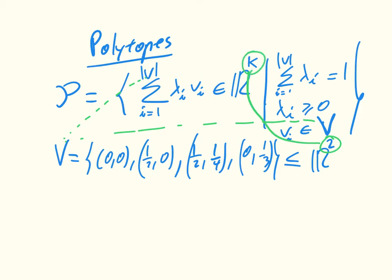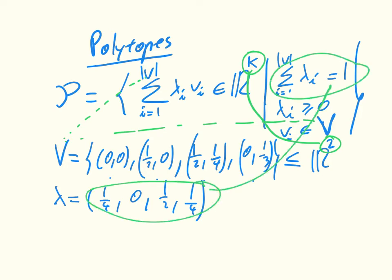If we have that, we can take any lambda that is going to have the same size as the size of V. For example, we could have lambda equals (1/4, 0, 1/2, 1/4). We're okay because the sum of the lambdas is equal to 1, as we need here, and they're all positive.